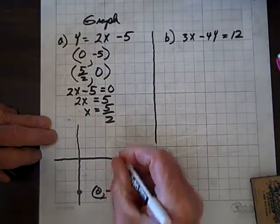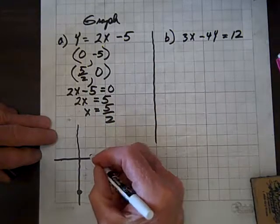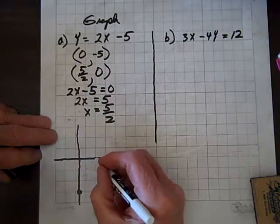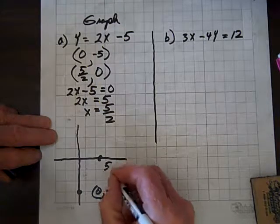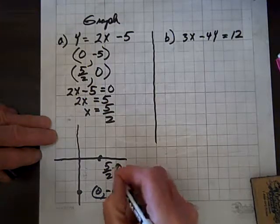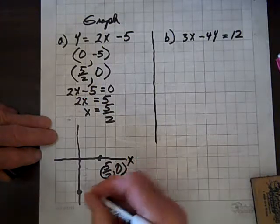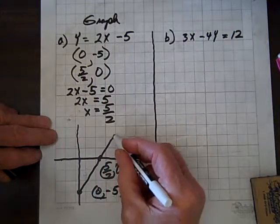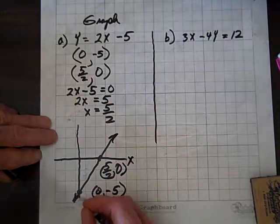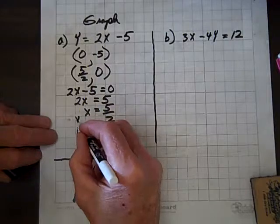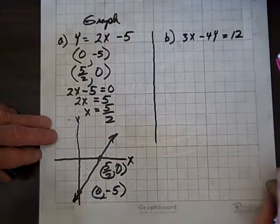And then we've got x equals 5 halves. So that's 5 halves, zero. And we'll draw a line through those two points. And we just did it. We graphed that equation. We graphed the line.